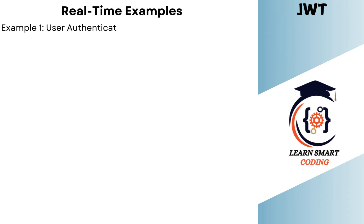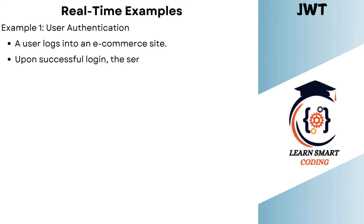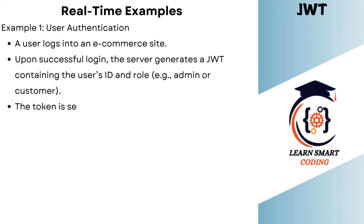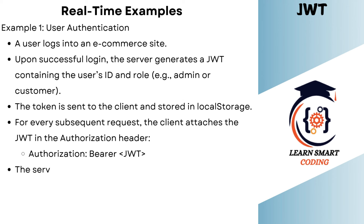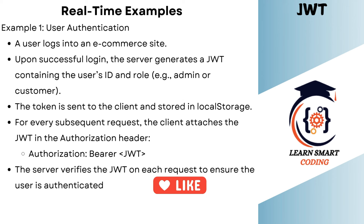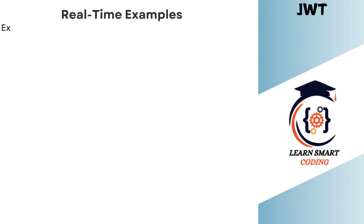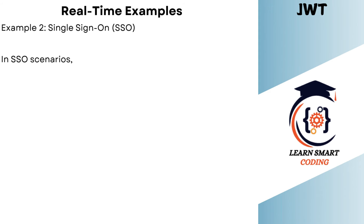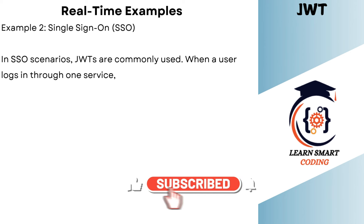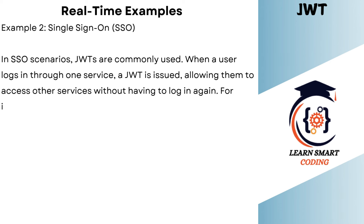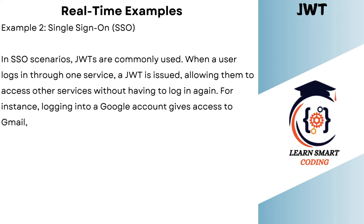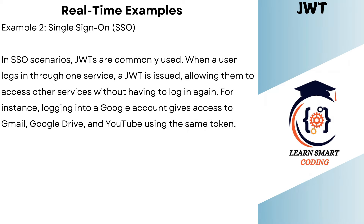Let's talk about real-time examples. In user authentication, a user logs into an e-commerce site. Upon successful login, the server generates a JWT containing the user ID, roles, and other user information. The token is sent to the client and stored locally. For every subsequent request, the JWT is attached in the authorization header as a bearer token. The server verifies the incoming JWT on every request to authenticate and authorize the user to perform further actions. Similarly, the JWT is used for SSO — single sign-on.